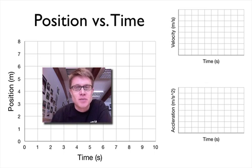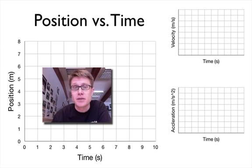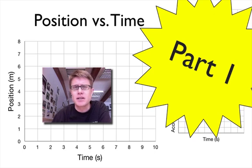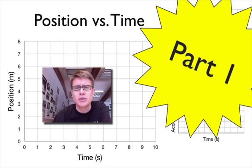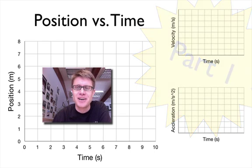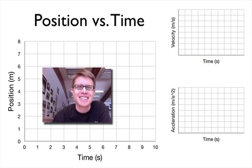Hi, this is Mr. Andersen and today I'm going to be talking about position versus time graphs. This is Part 1 — I'll also do a Part 2 on position versus time. Part 1 covers objects that have constant velocity, and in Part 2 we'll talk more about acceleration and deceleration. So if you're in the wrong spot, make sure you start where you should.